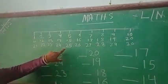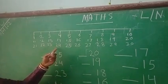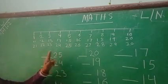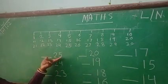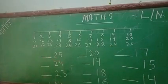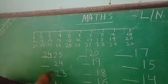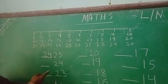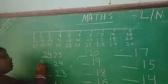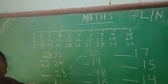So see: 25 is here. Before 25, which is the number? I have to write it here — 24. 24 is the before number of 25. We write 24. After that the number is 24, so what will the before number of 24 be? It will be 23. What is the before number of 24? It is going to be 23.